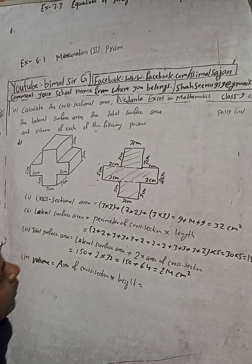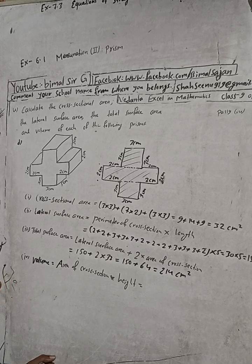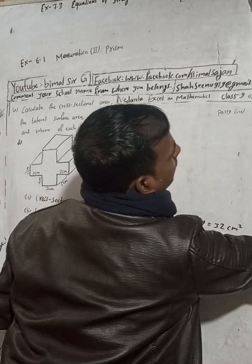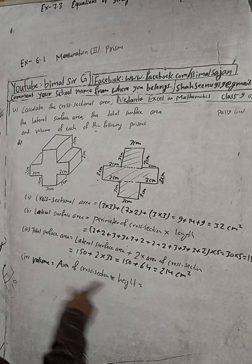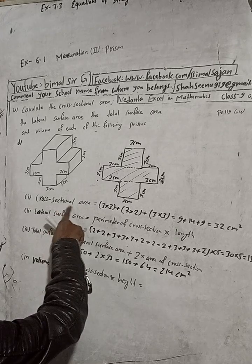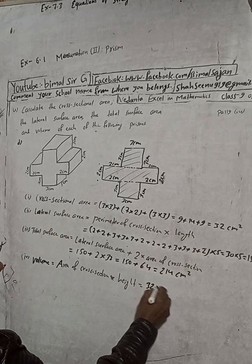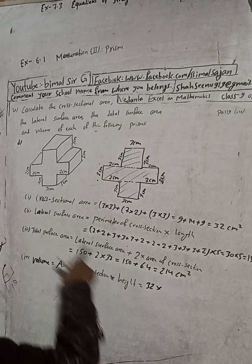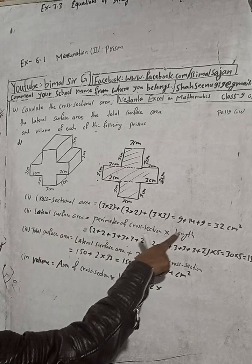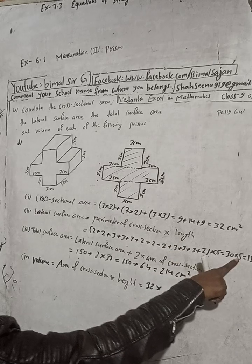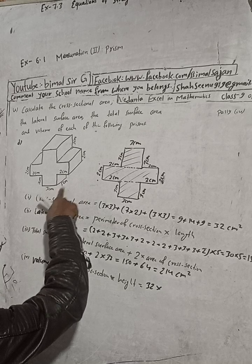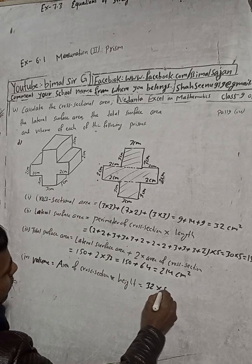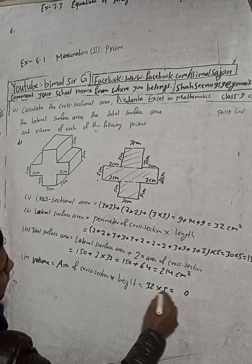Now for the volume, the formula is area of cross section × height. Area of cross section = 32 cm². Height — as I mentioned for lateral surface area, we take the length, which is 5 cm, as the height for the volume as well. So volume = 32 × 5 = 160 cm³.